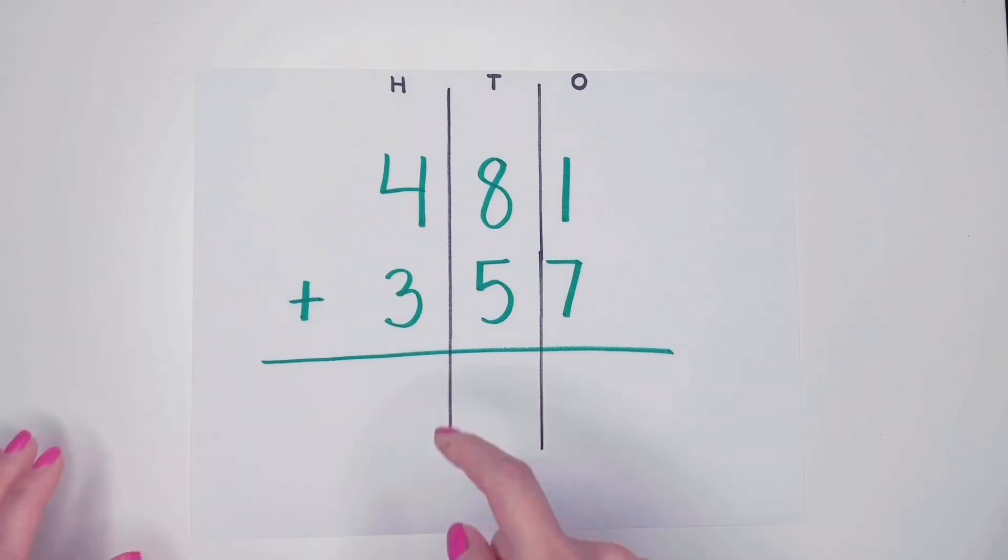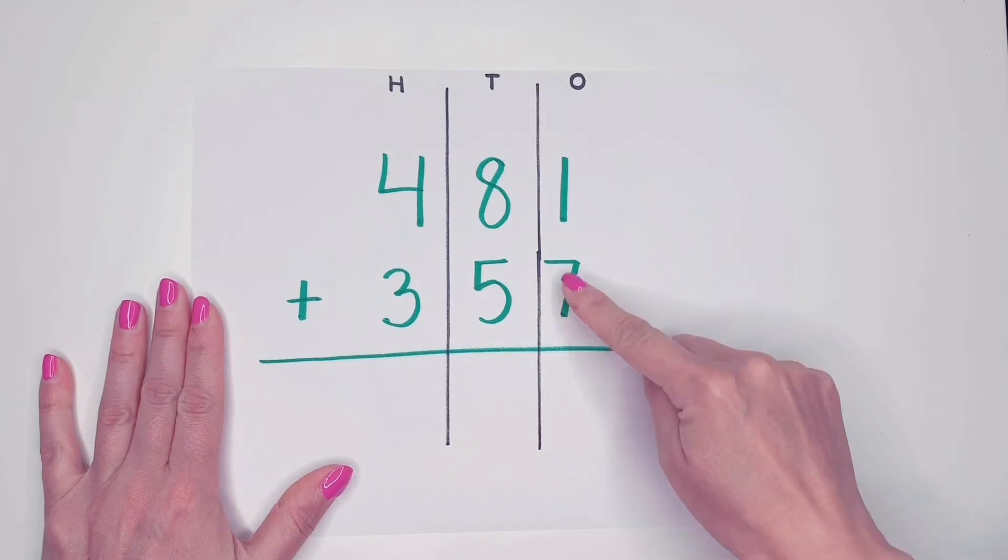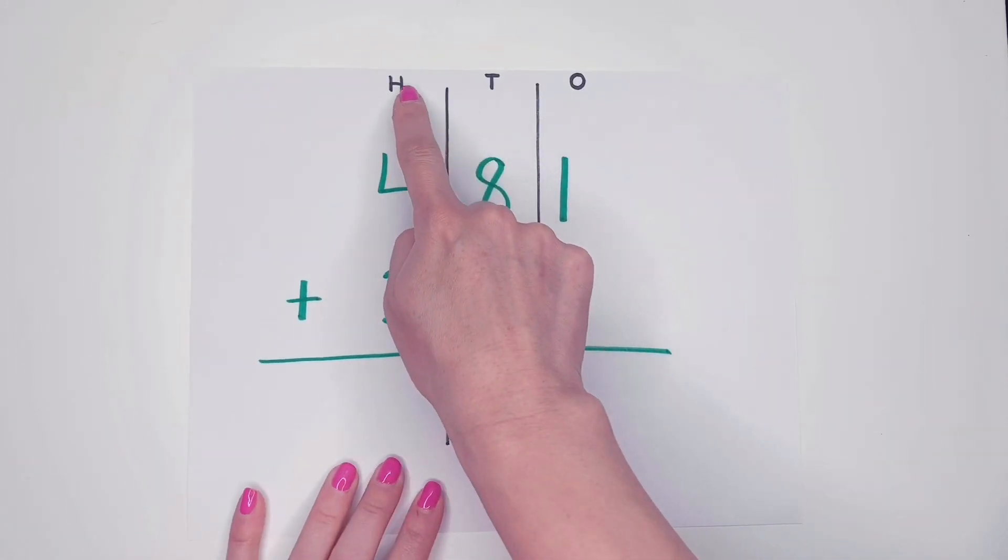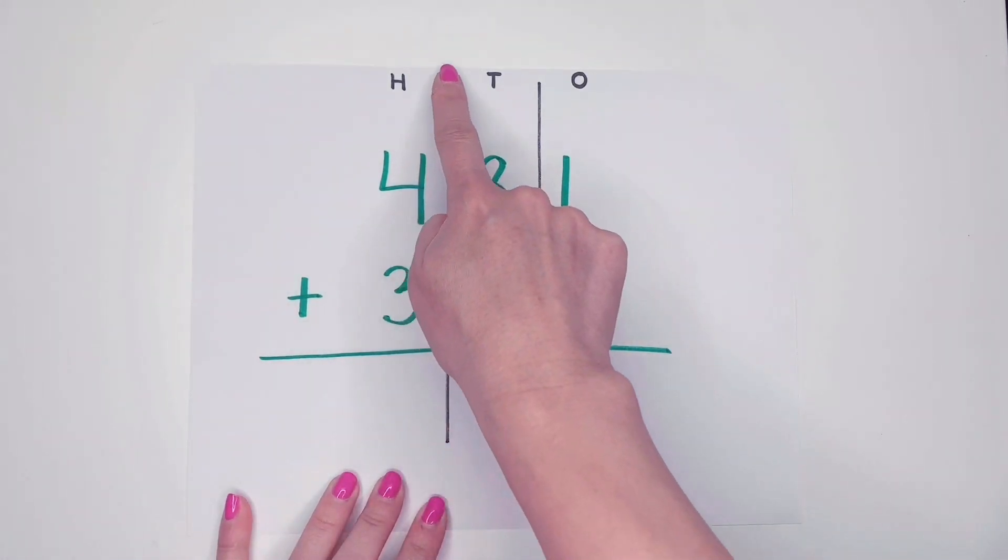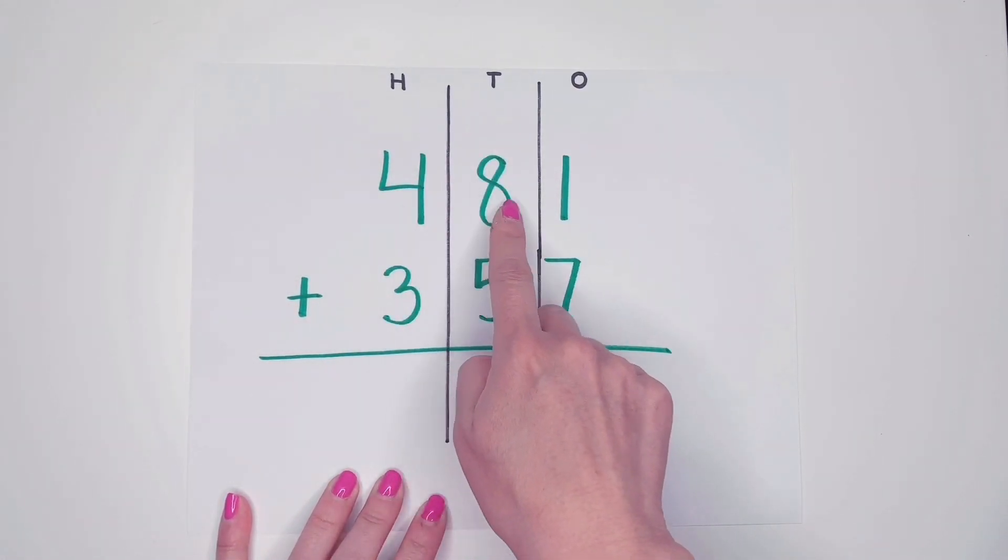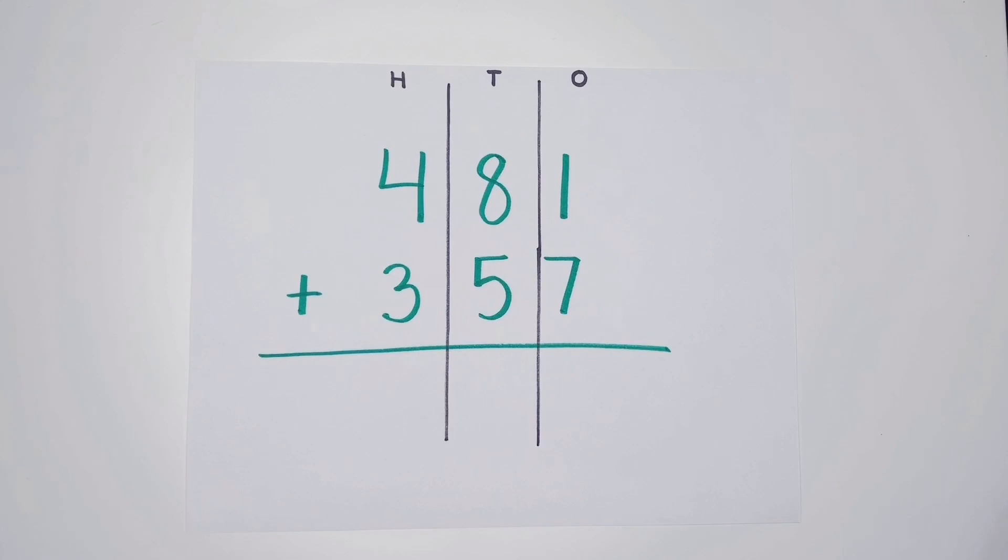So basically we're adding our three-digit numbers vertically and we can even imagine this being like an HTO chart. So what I just did is I put lines between my hundreds and tens and lines between my tens and ones. So that'll kind of help me visualize an HTO chart as I add for this first example.